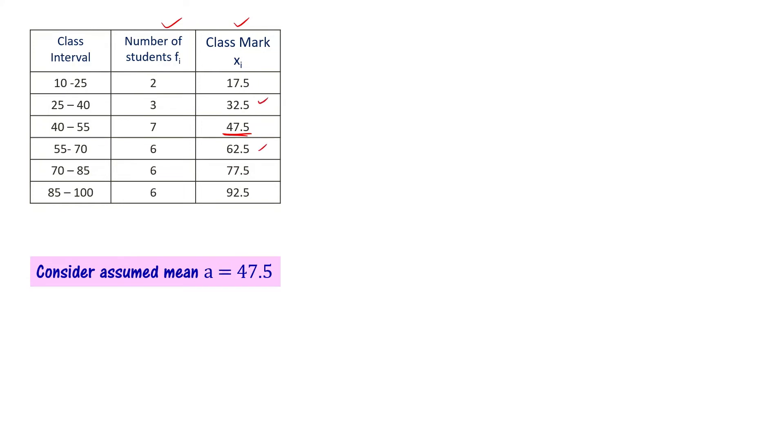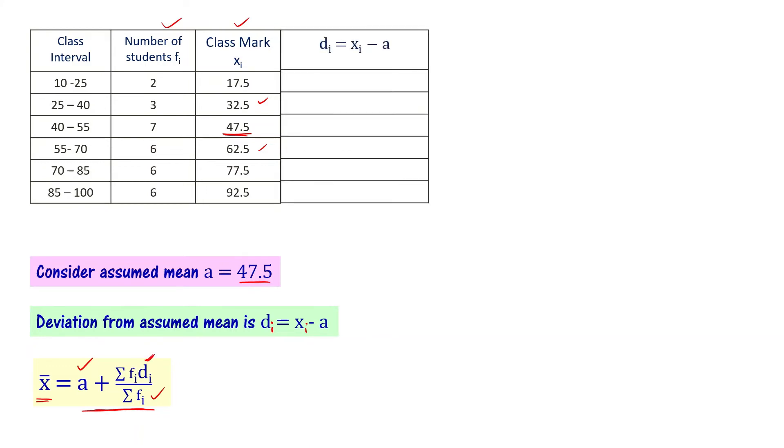Let me choose any value as the assumed mean. I'll take a = 47.5. The formula is di = xi - a. The assumed mean method formula is x̄ = a + Σfidi / Σfi. We have the a value, we have the fi value, now let's find di.